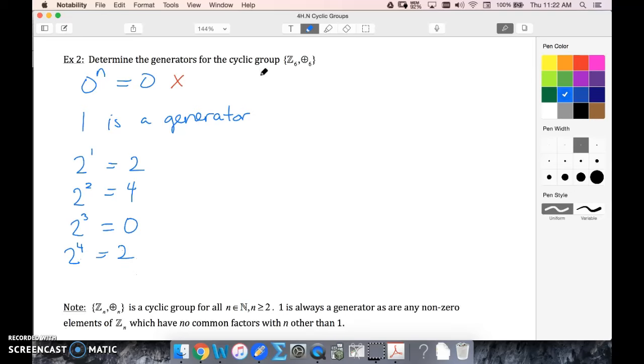So we never hit our other elements. Remember, we're trying to hit zero, one, two, three, four, and five. We're never going to hit any of our odd elements this way, so two is not a generator.